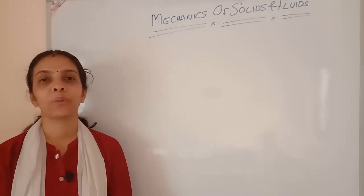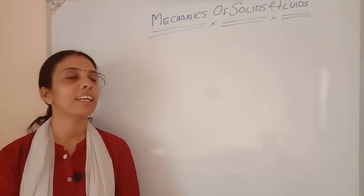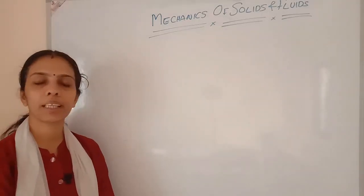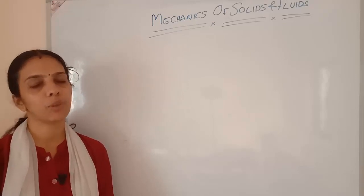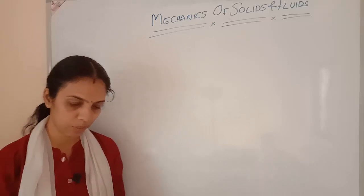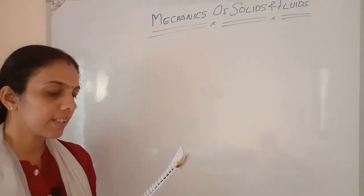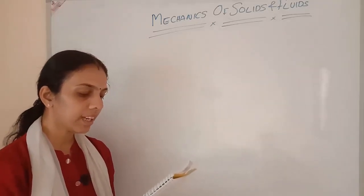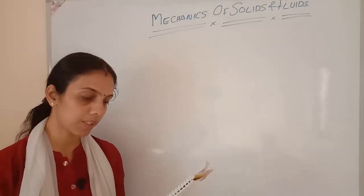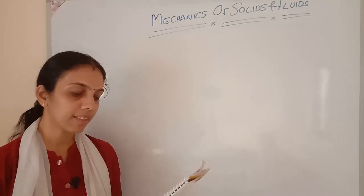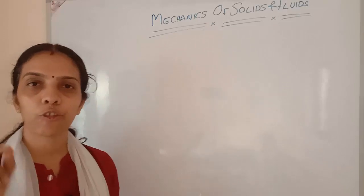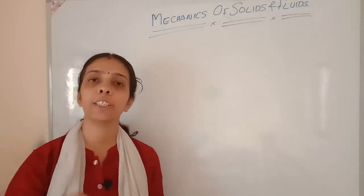Hello, welcome back to Learn Physics. In today's topic, we are starting a new chapter that is mechanics of solids and fluids. Both units we are discussing together. First question: a rigid body is a body with a perfectly unchanging shape under the influence of an external force. What do you mean by the center of mass of a rigid body?